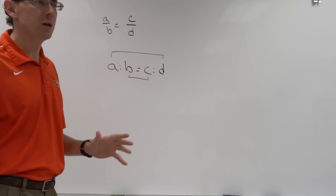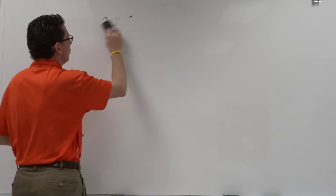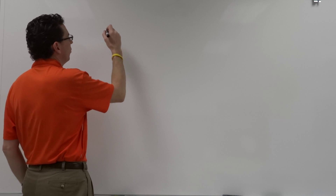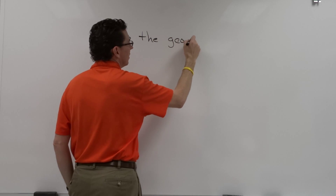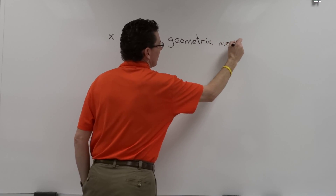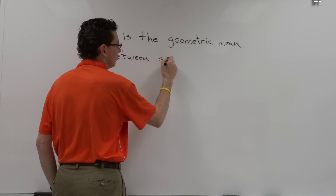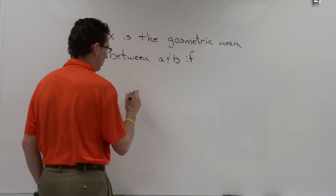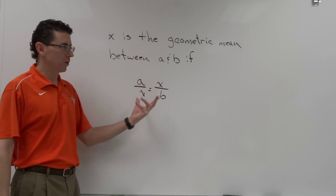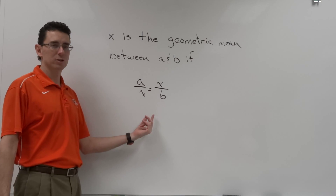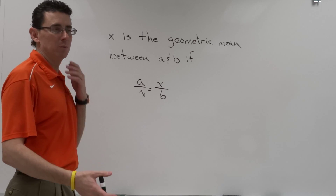Now when they talk about the geometric mean between two numbers, that's when both of the middle terms are going to be the same. So we could say x is the geometric mean between a and b if the following is true: a over x equals x over b. Notice if we set this up in a proportion — a to x equals x to b — the means would be the same, which is why this is referred to as the geometric mean. So I could set up some problems and say find the geometric mean between the following two numbers.